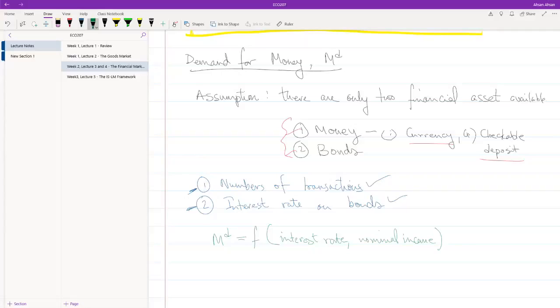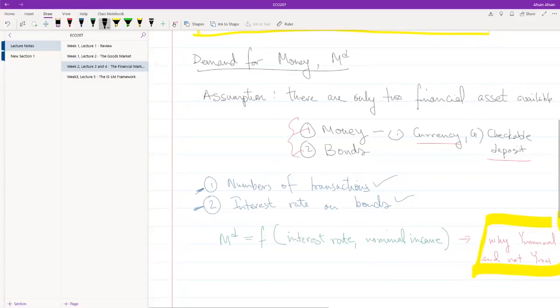The second thing is our nominal income. Obviously, if you have a lot of income, you will hold more money compared to someone who doesn't have a lot of income. That's pretty straightforward. Now what I want you guys to think about is why are we using nominal income and not the real income. This is something I'm not going to talk about now. I want you guys to think about it—it's not that difficult to figure out, but you will have to spend a few minutes at least thinking about it.